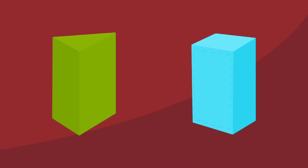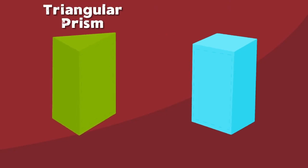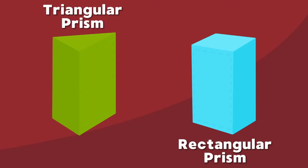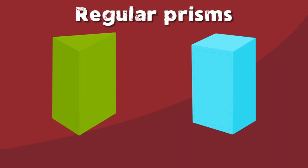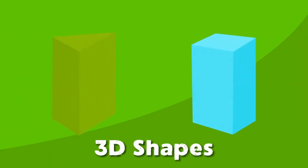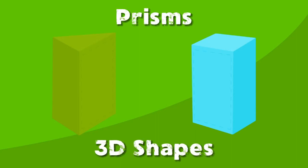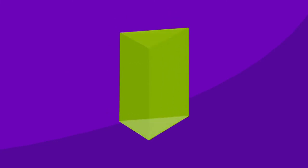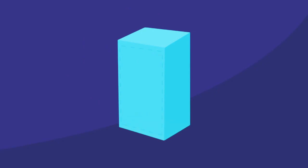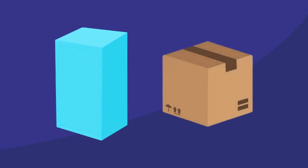These are the two types of prisms we will learn about: triangular and rectangular. Both triangular and rectangular prisms are classified as regular prisms, formed from the polygon class. A triangular prism is a 3D shape that is two equilateral triangles connected to each other by edges. The rectangular prism is the same but with a different shape — it is shaped like a box, made of rectangles.